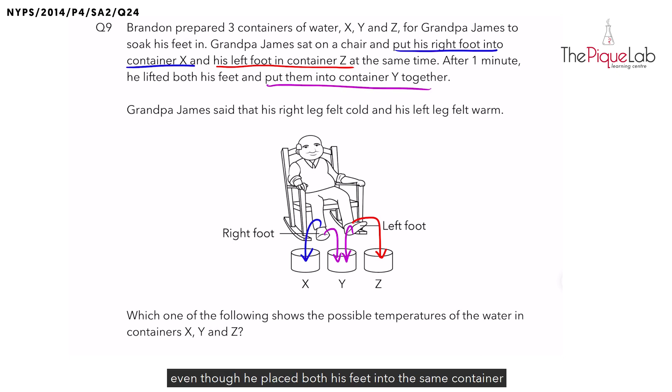Even though he placed both his feet into the same container together, Grandpa James said that his right leg felt cold but his left leg felt warm. And based on these different observations, we need to find out what are the possible temperatures of water in all three containers.